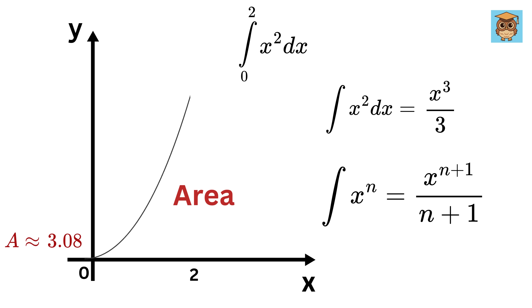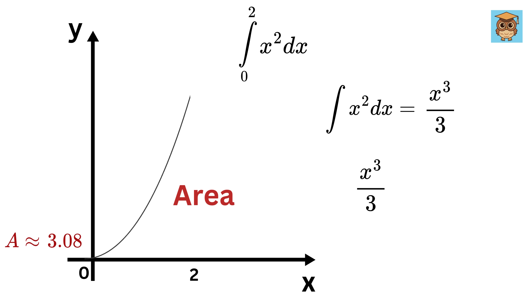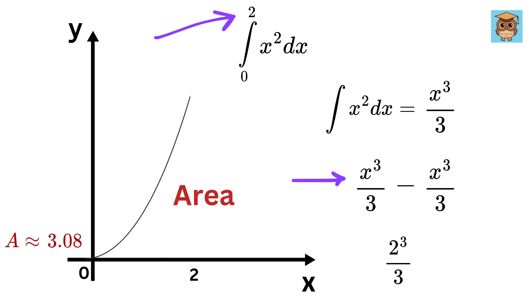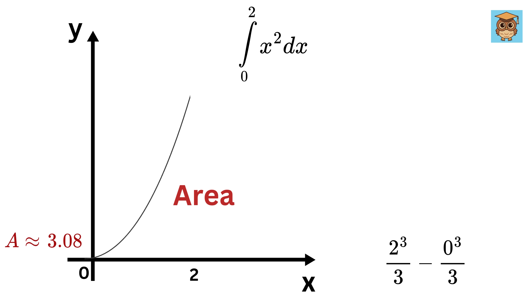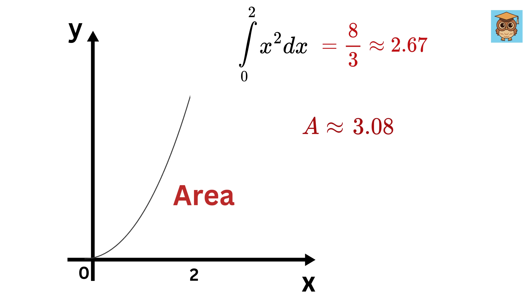Now, to calculate the numerical value, write X cubed over 3 minus X cubed over 3 and put X equals 2 in the first term and X equals 0 in the second. This will turn out to be 8 over 3, or nearly 2.67. See, it is so close to our calculated value using 10 rectangles. Isn't this cool?